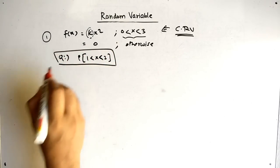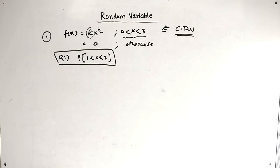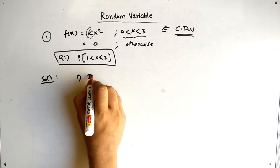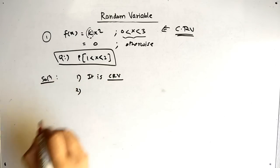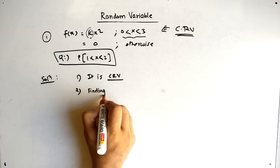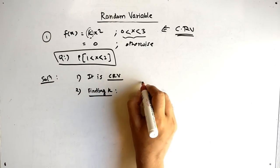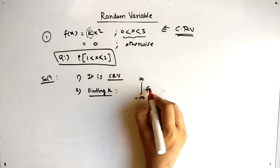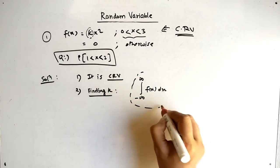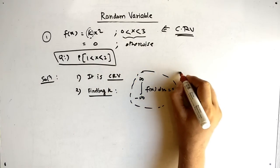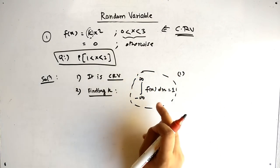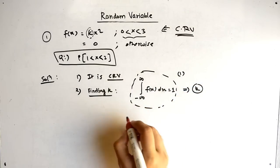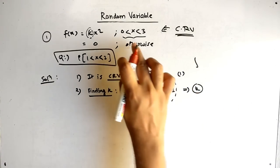In the solution, first write that it is a continuous random variable. Second, we have to find k. To find k, we integrate from minus infinity to infinity: the integral of f(x) dx equals 1. This is our first formula. Minus infinity to infinity here means the x range from 0 to 3.